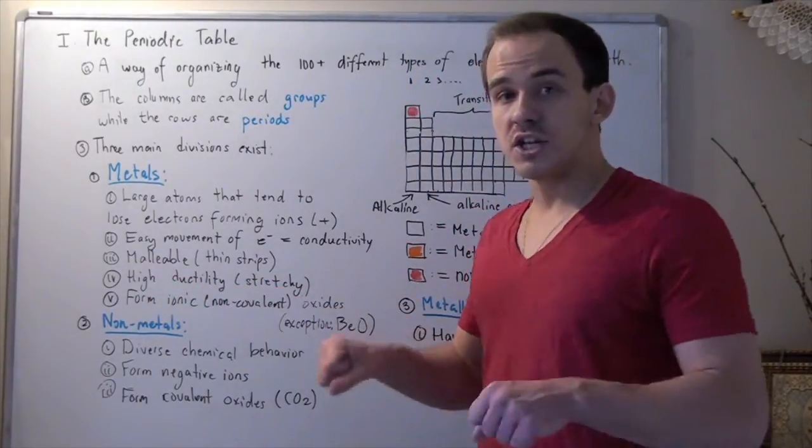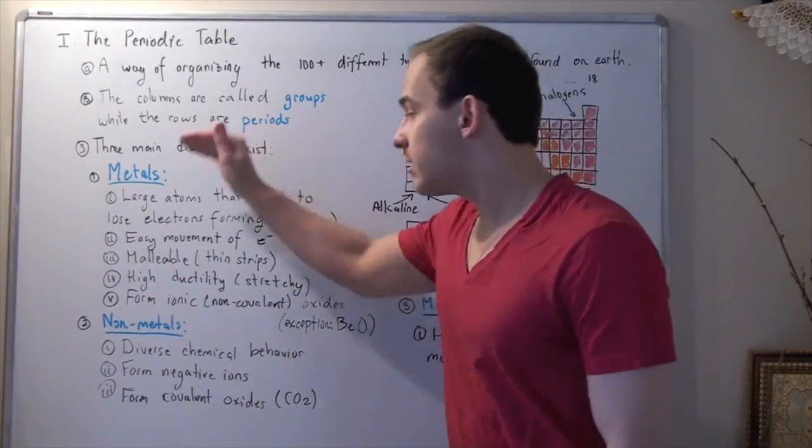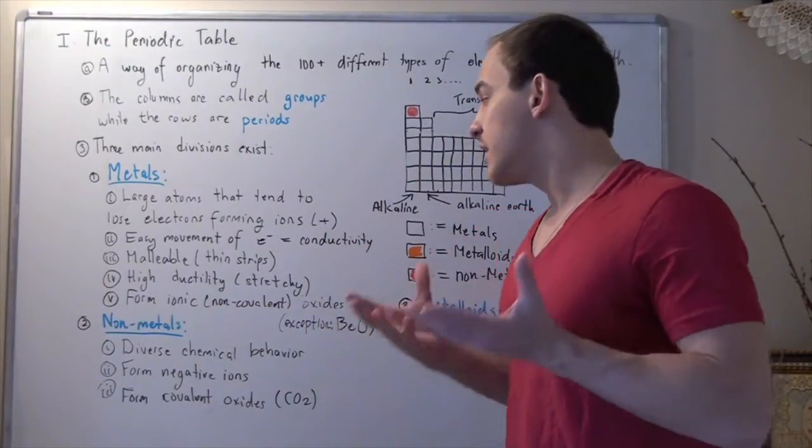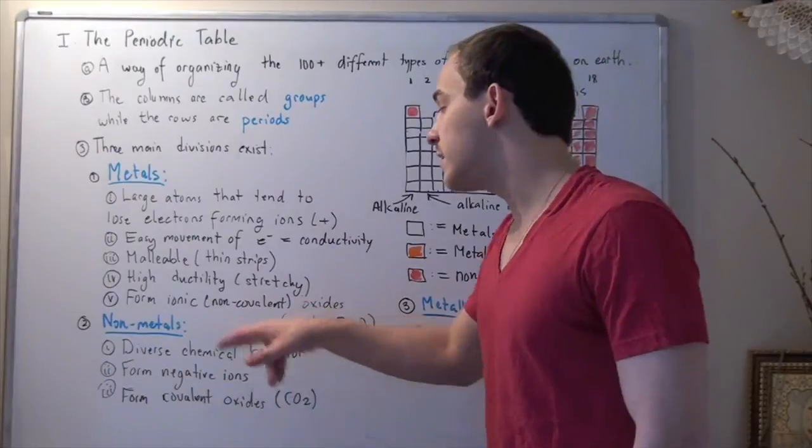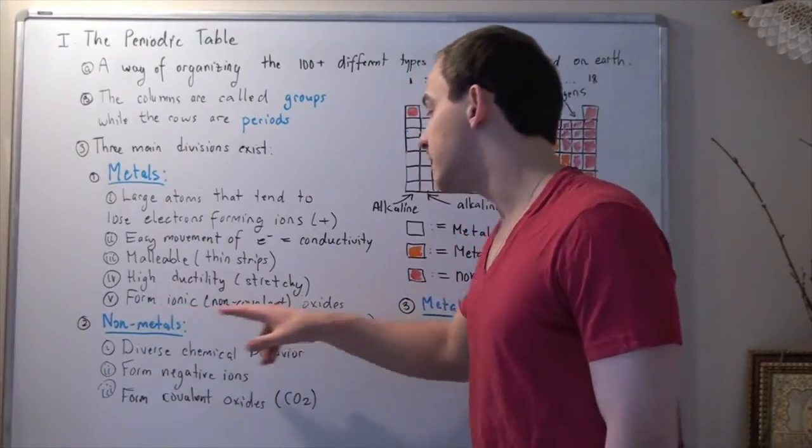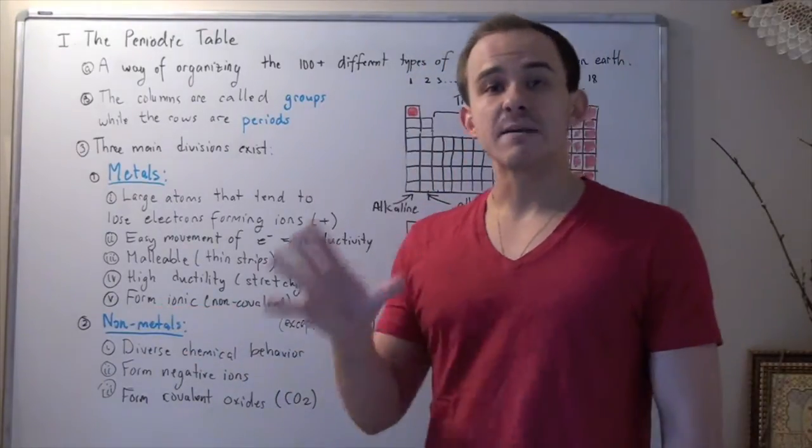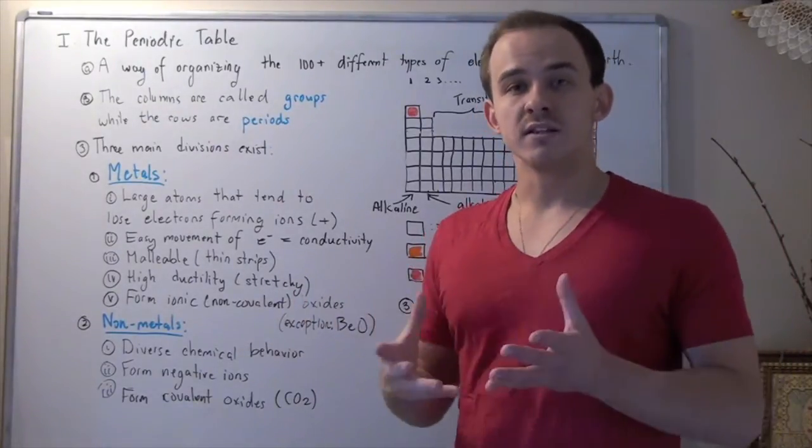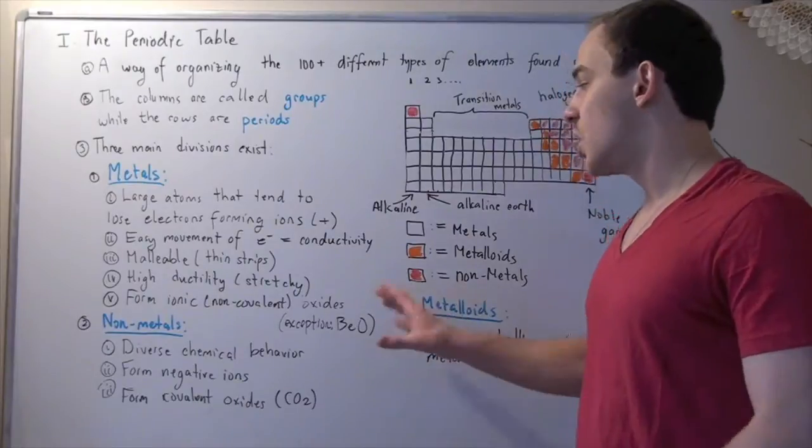In other words, they're stretchy or stretchable. Now, metals, whenever they form compounds with oxygen, they form or bond non-covalently. They create ionic oxides. The one exception is beryllium. Beryllium bonds with oxygen covalently, and that's the only exception known.